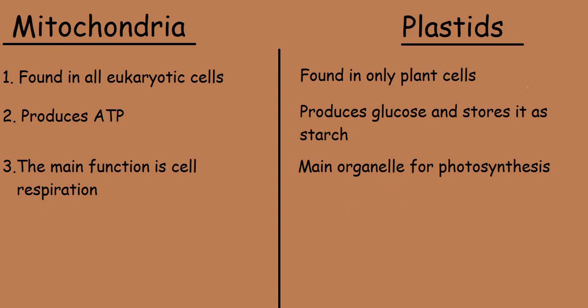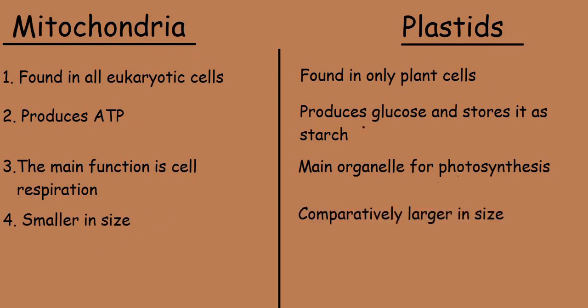The fourth point: mitochondria are relatively smaller in size, and plastids are comparatively larger in size.